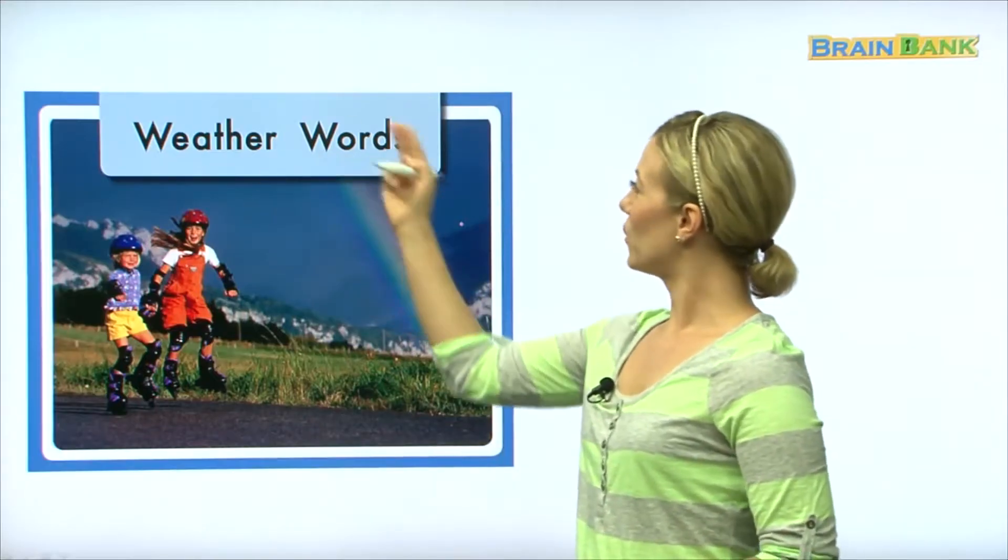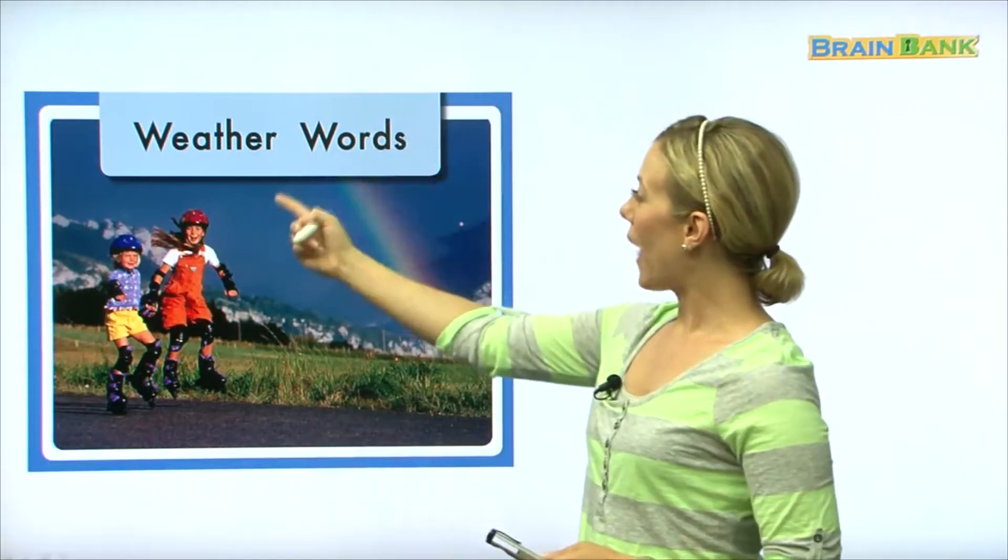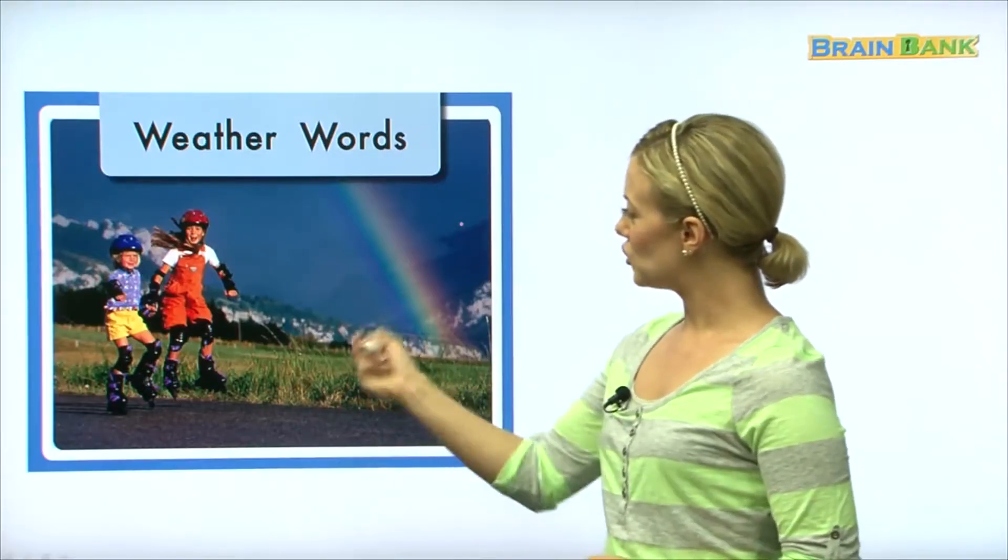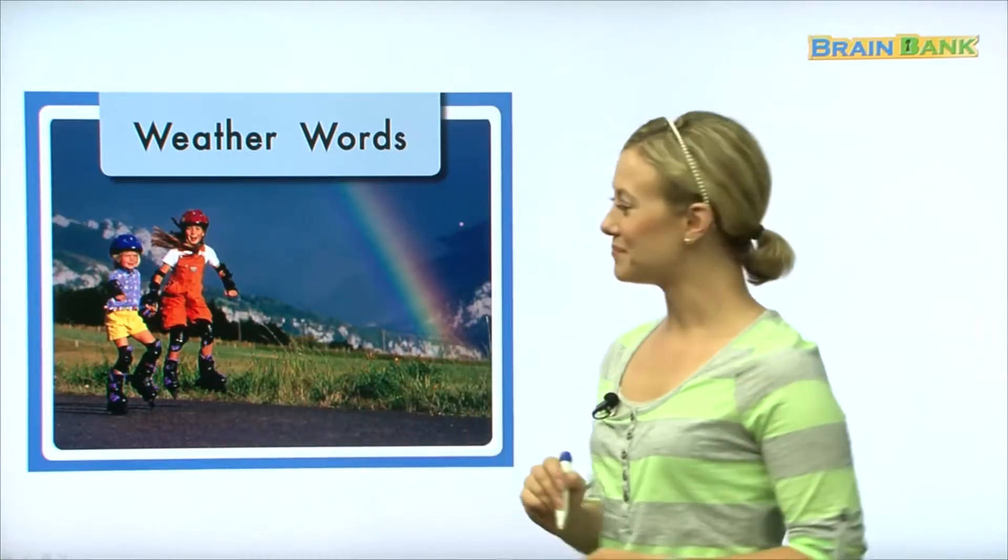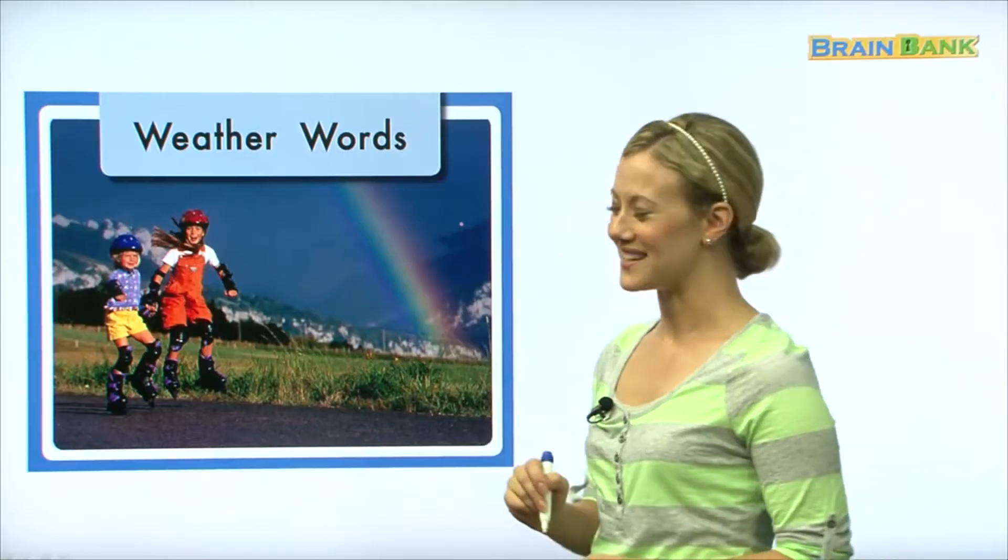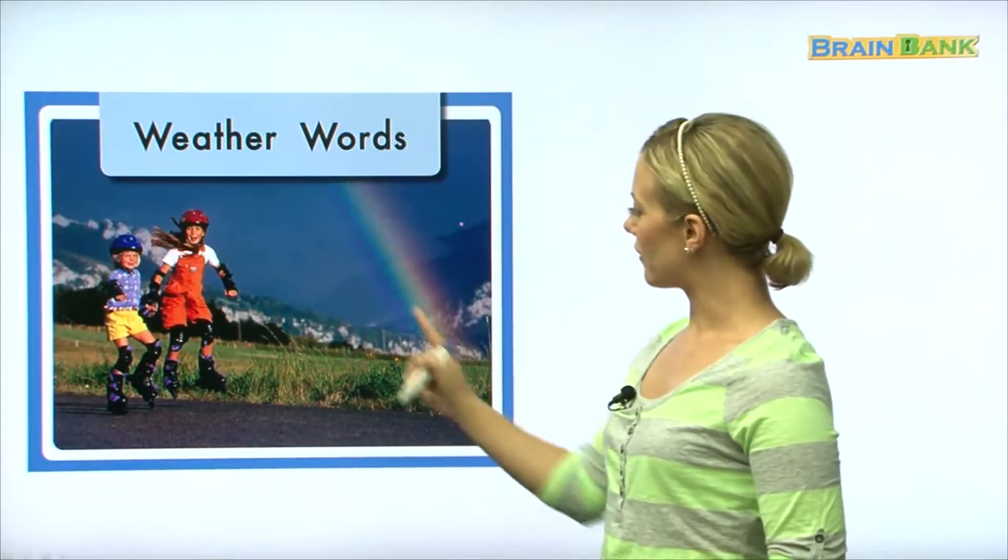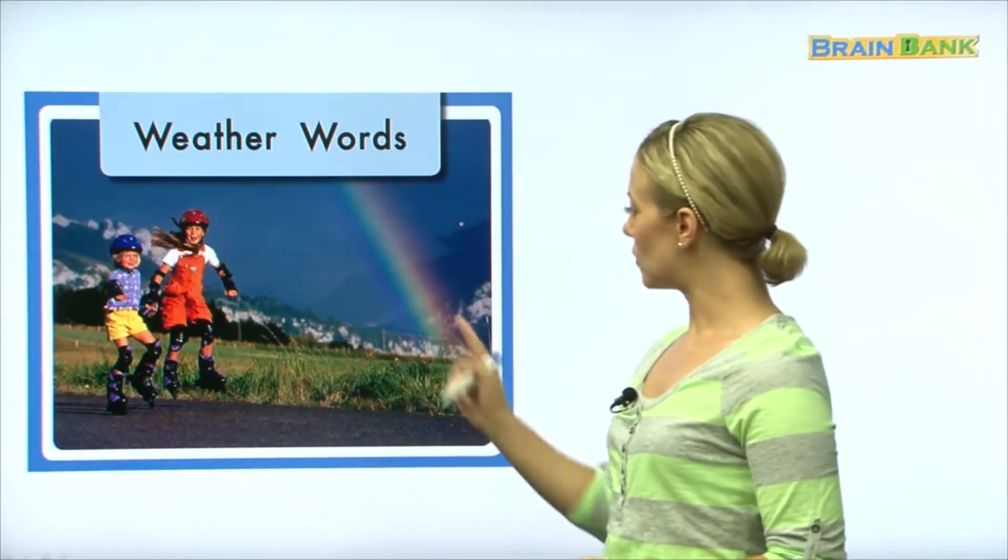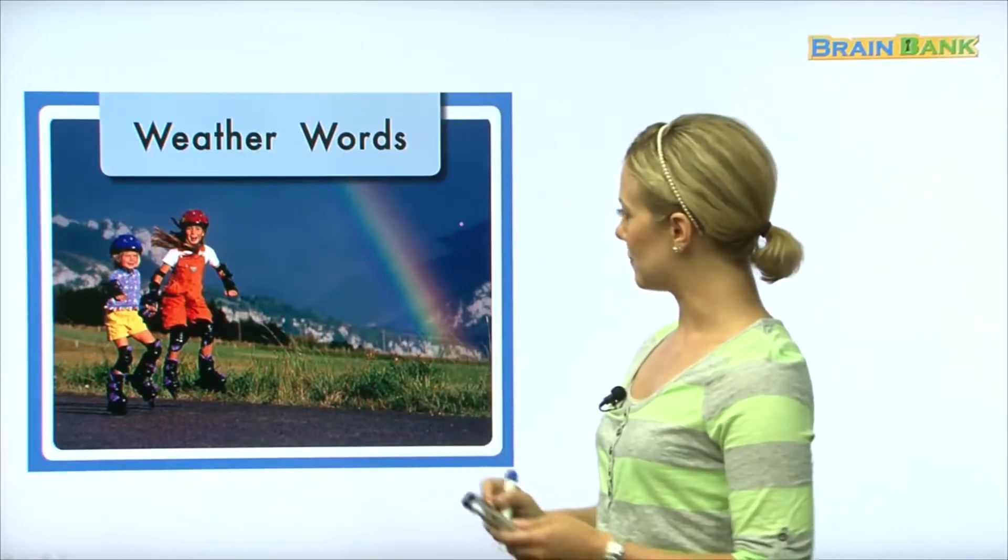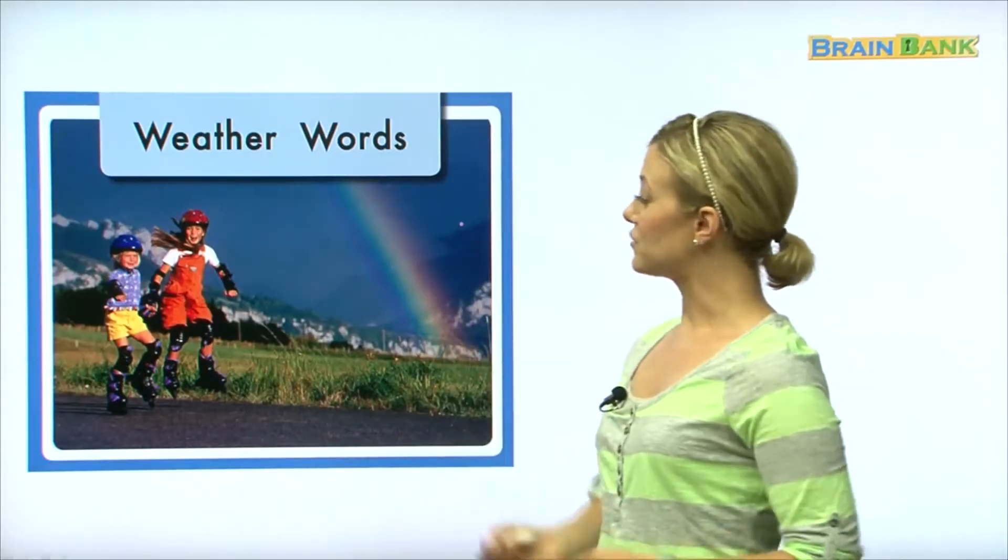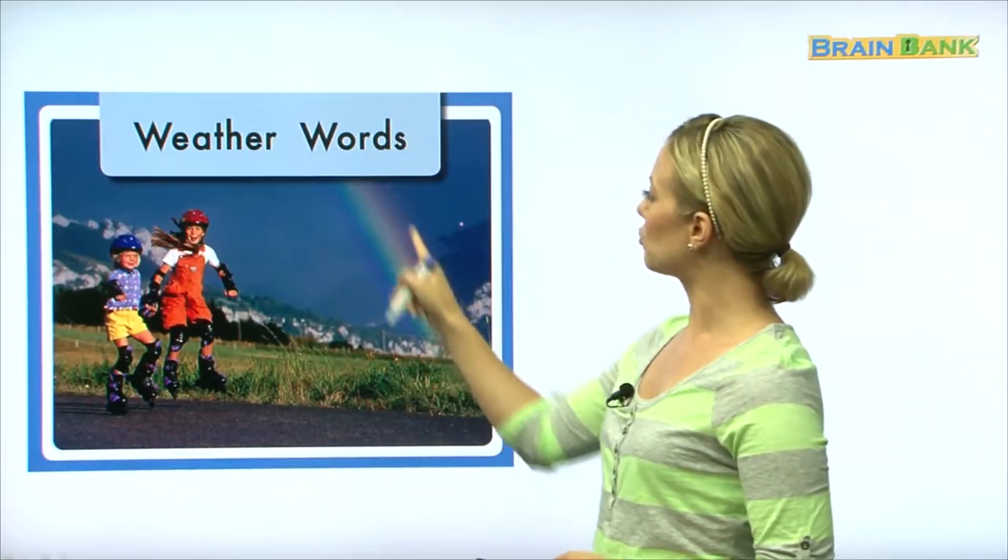So on the first page: Weather Words. Can you read with me? Weather Words. We will learn words about the weather. So what do we see here? We see two girls and it looks like they are roller skating and they look like they're having a good time. Now how is the weather in this picture? Yes, the weather looks very nice. It looks sunny and there's a rainbow in the sky. So maybe we just finished a storm because there's a beautiful rainbow in the sky.